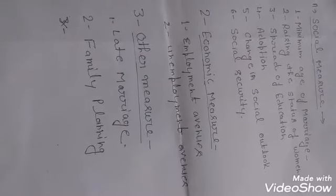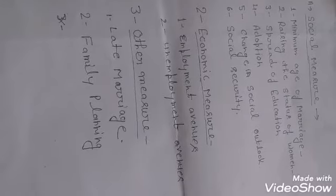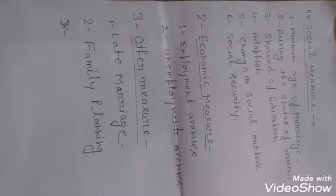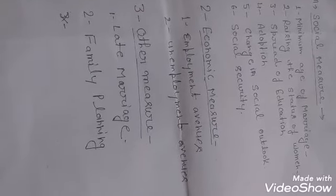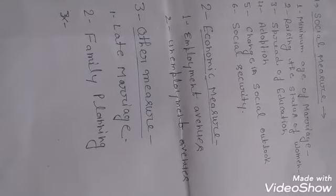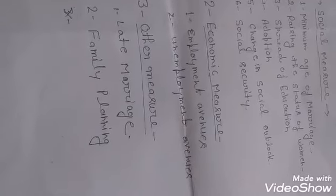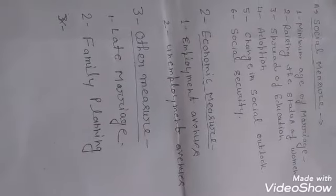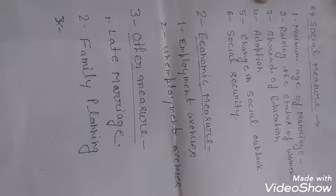Next is change in social outlook. Our society holds many old views. If we change our society's outlook, then we can control population explosion. If the thinking of social families is changed, then we can control this problem.